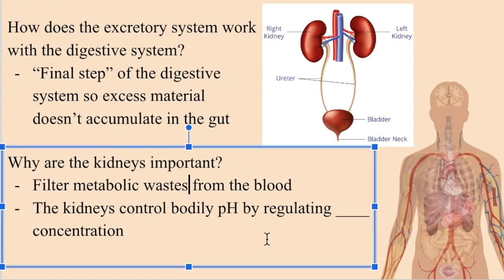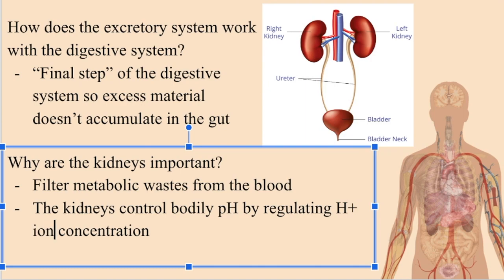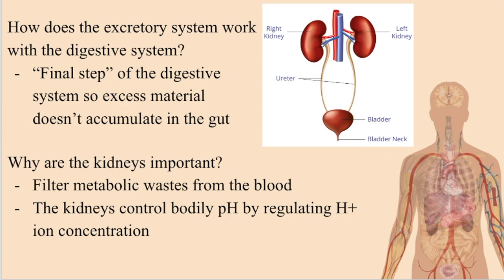Through this H+ ion excretion, the excretory system helps to maintain bodily pH so that the digestive system can continue to function, as the digestive system essentially would not be able to optimally function when the blood is too acidic, since certain digestive enzymes could denature in acidic environments.